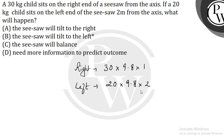If we compare the two torques, we find that the left child's torque will be more. So the seesaw will tilt to the left. The correct answer is option B — the seesaw will tilt to the left.